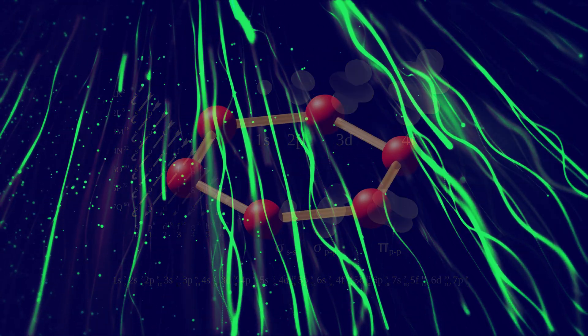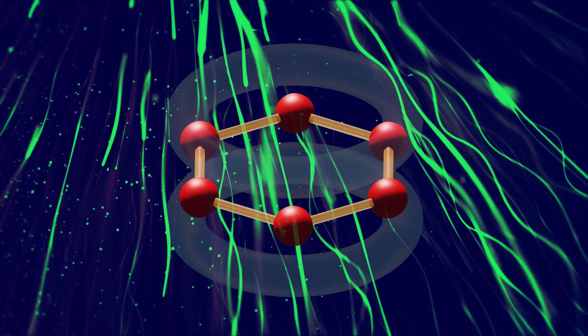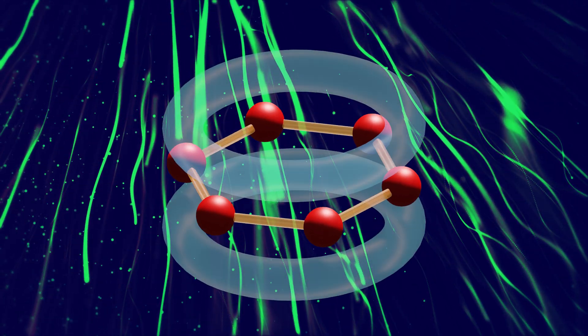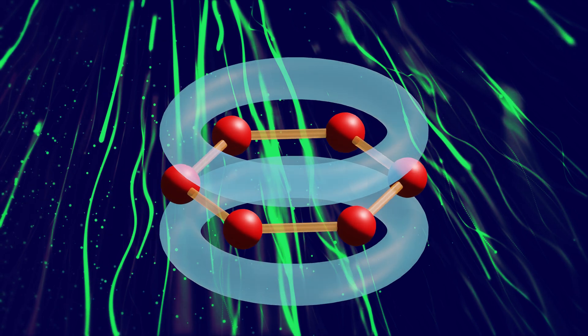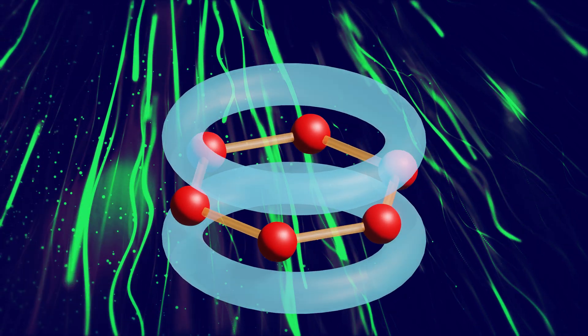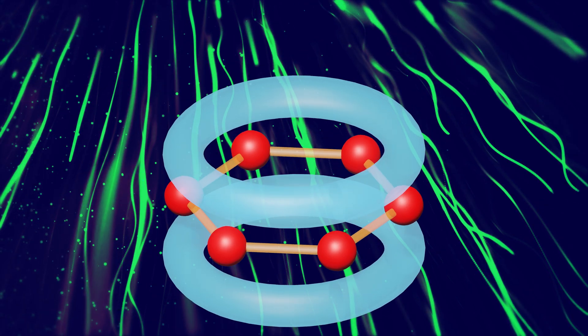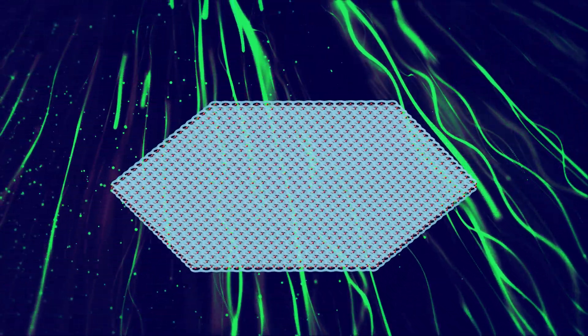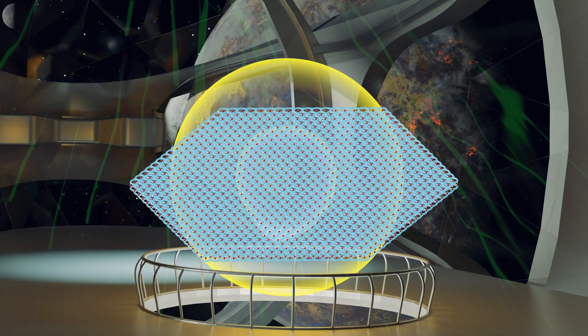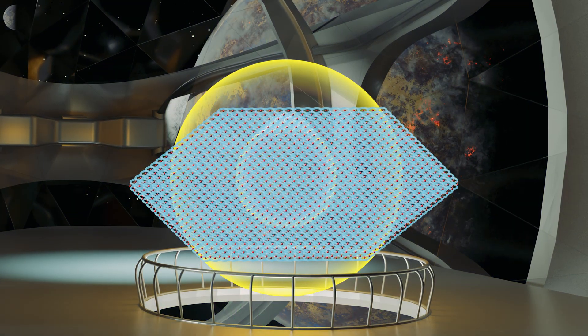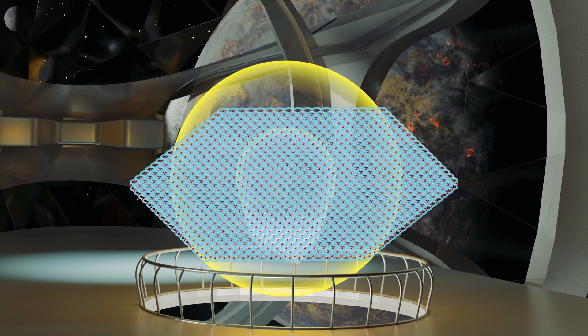In graphene, each hexagonal carbon ring has its own delocalized orbital on both sides of the mesh. Free electrons from anywhere in the ring can move across this orbital. Because graphene is a continuous sheet of these interlinked rings, each orbital overlaps, allowing electrons to move freely across the entire structure. These properties make graphene what is known as a zero-overlap semi-metal.